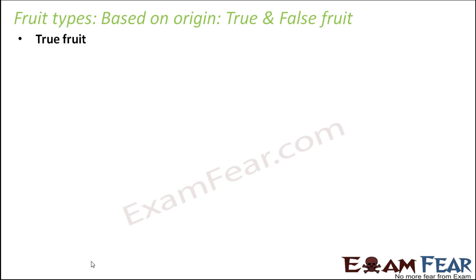So what is a true fruit and what is a false fruit? A true fruit is a fruit which develops from the ovary of the flower. Now you might be wondering: just now I was explaining that the ripened ovary is the fruit, so how can a situation come where a fruit does not develop from the ovary? There are certain fruits where what we actually eat doesn't develop from the ovary — it develops from some other parts of the flower. Most fruits are true fruits, but there are some which are not.